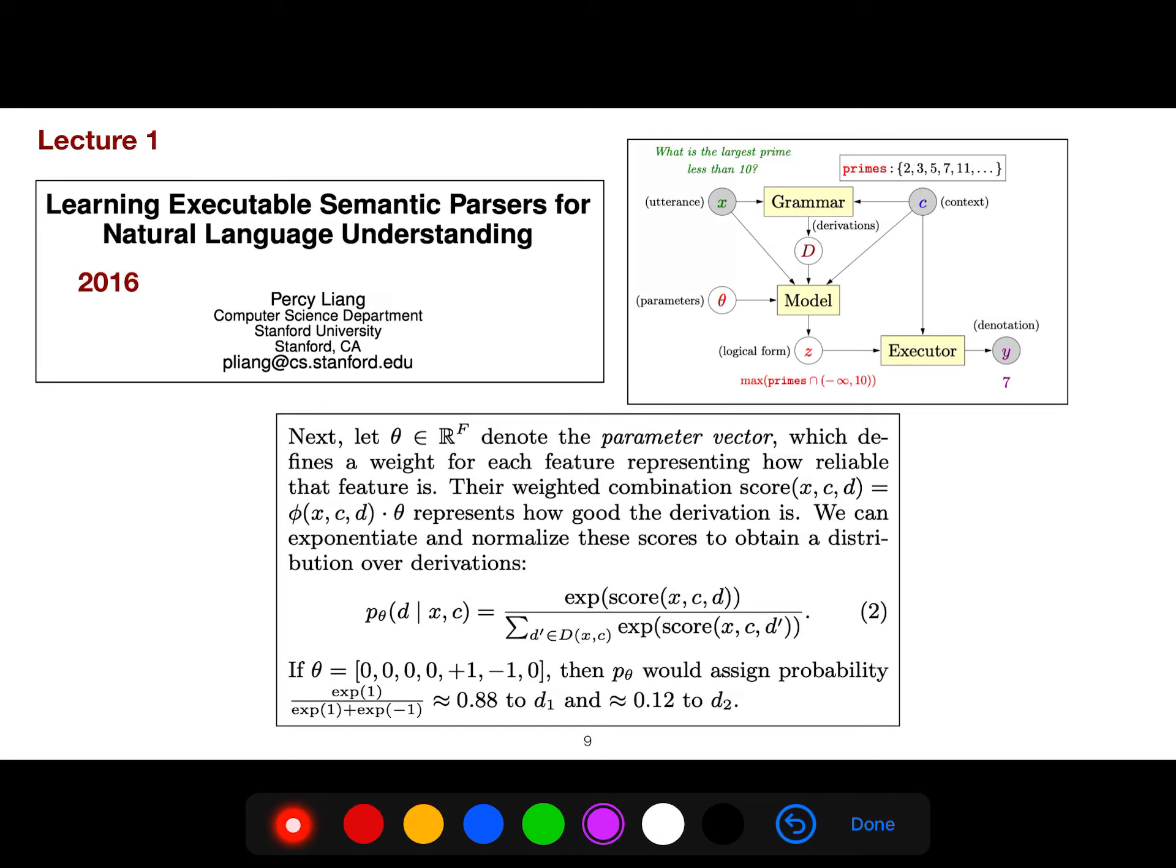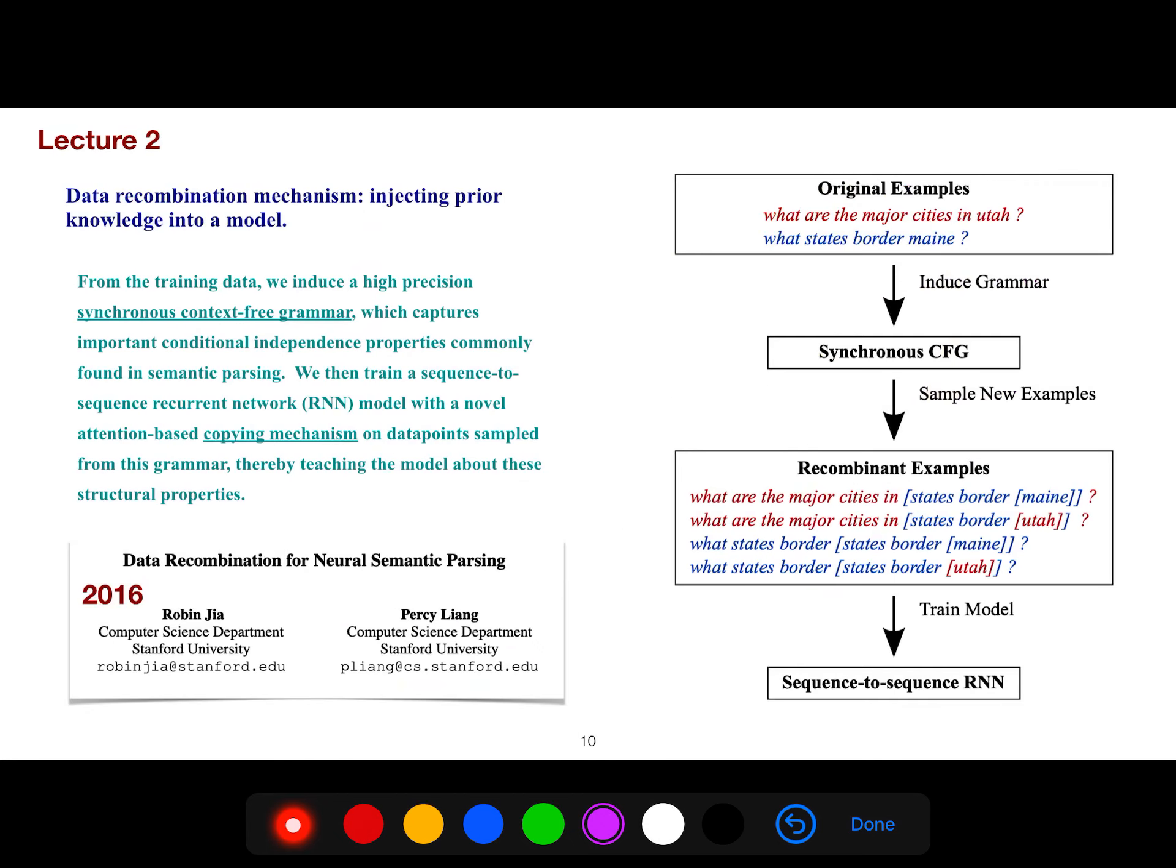In Lecture 1, I explained very basic things by the article of Percy Leung, a great researcher on semantic parsing and question answering. This is the simple model that we always use. What is the probability of derivation given your utterance?